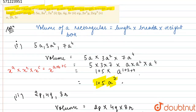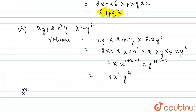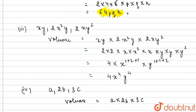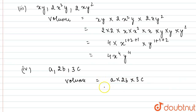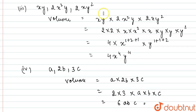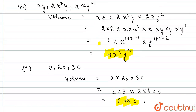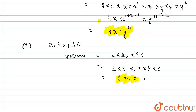The fourth part is: a, 2b, 3c. The volume will be equal to a multiplied by 2b multiplied by 3c. Writing the like terms together: 2 × 3, multiplied by a × b × c. 2 × 3 is 6, so the answer is 6abc. This is the volume for the fourth part. We have now solved all four parts. Thanks for watching.